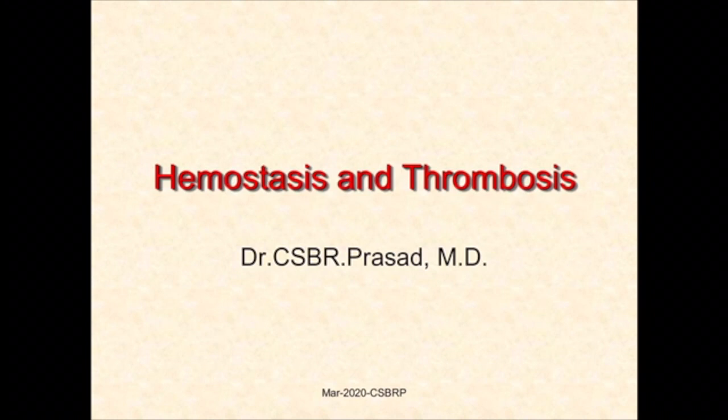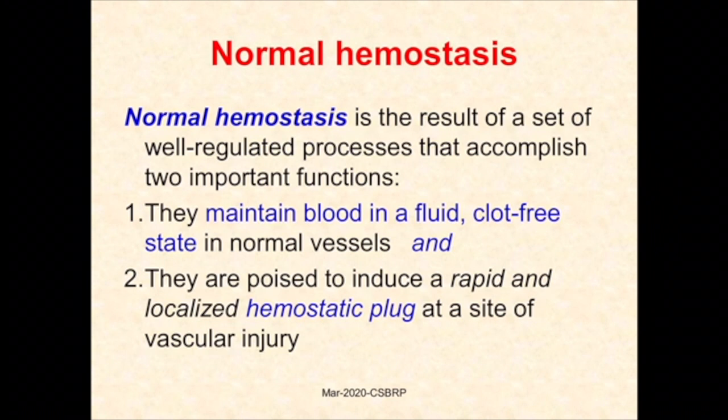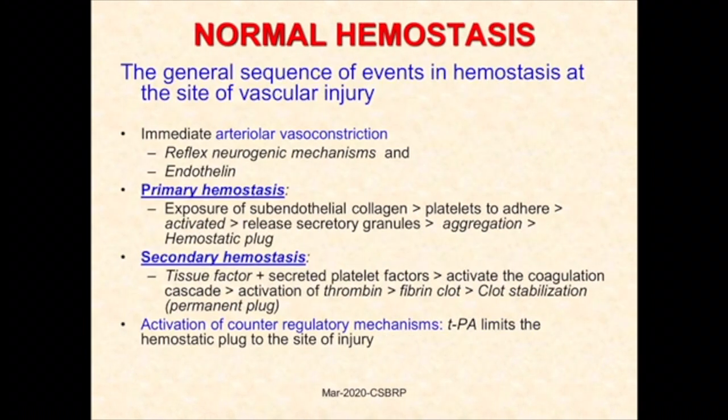In this lecture we will be dealing with the process of thrombus formation known as thrombosis. Normal hemostasis is responsible for maintaining blood in a fluid state and stopping bleeding when there is injury by hemostatic clot formation. The general sequence of events in hemostasis includes vasoconstriction, primary hemostasis, secondary hemostasis, and finally containment of clot progression through activation of fibrinolysis.